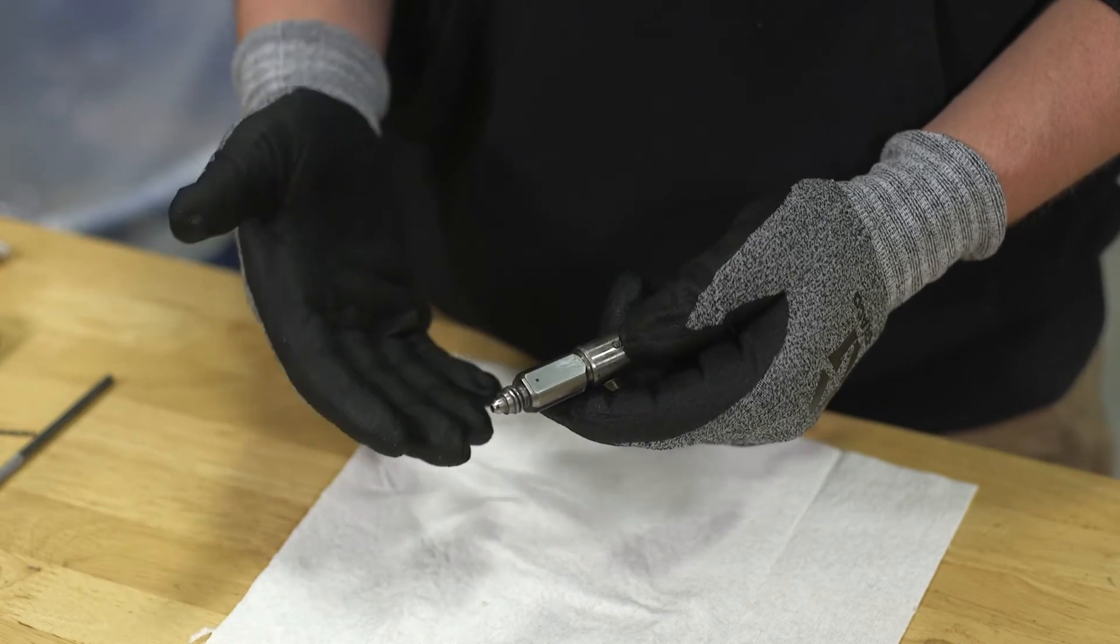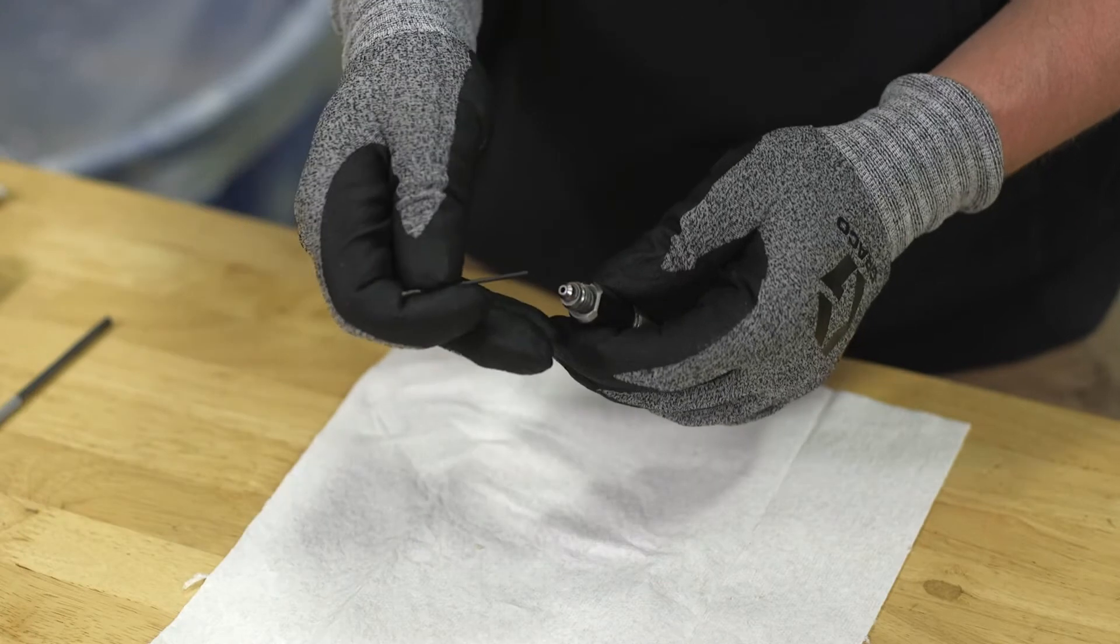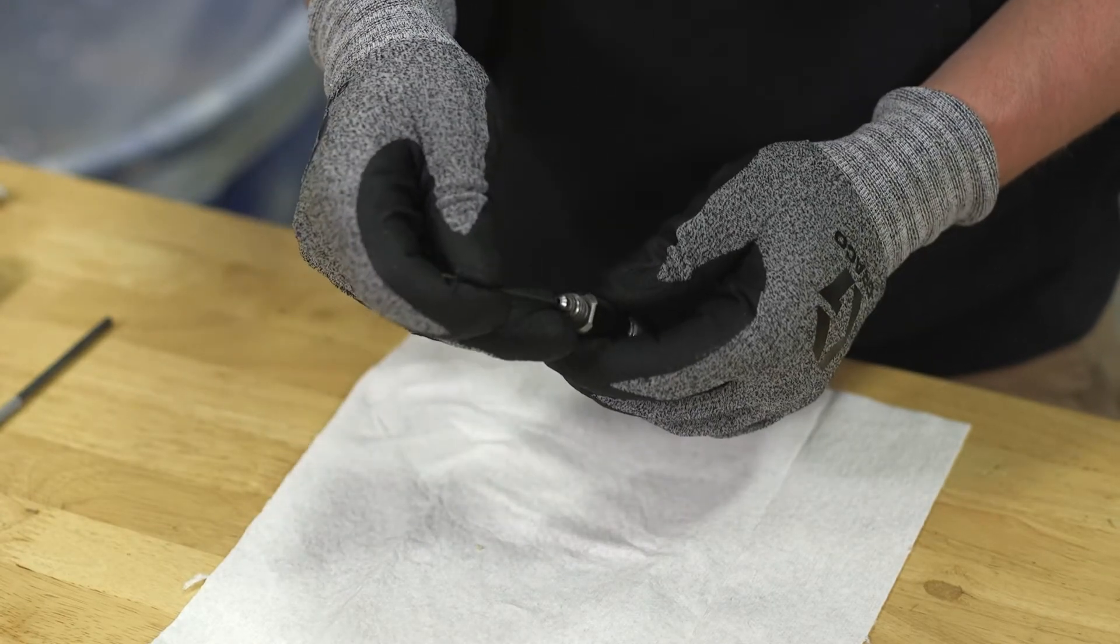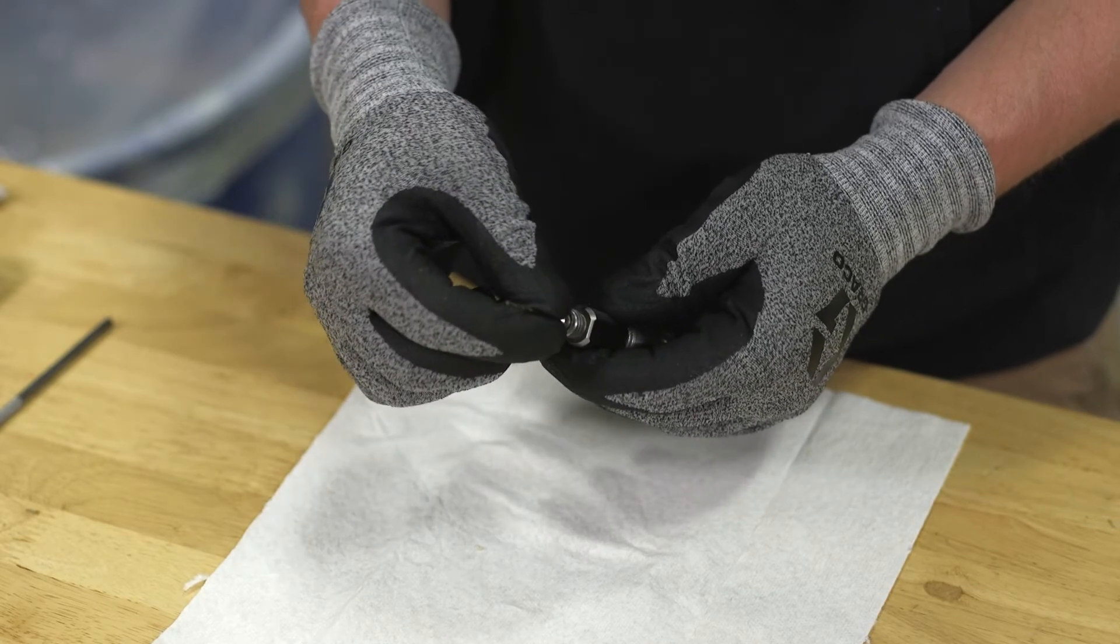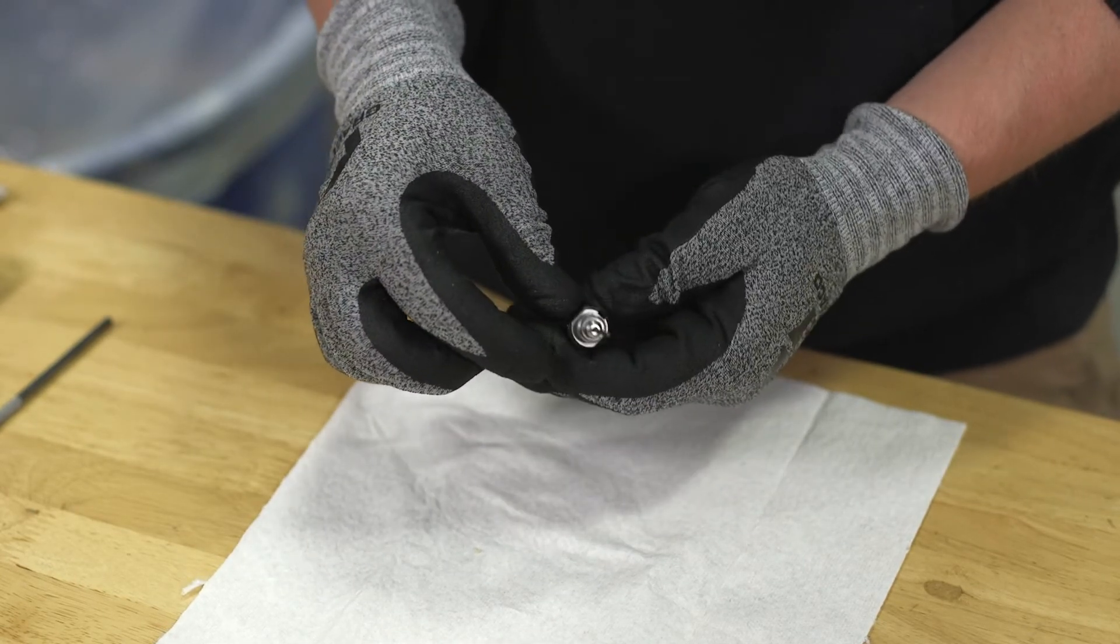So now you're going to take your front drill and you're actually going to spin it around backwards. You're going to put that in your chamber. That thing should hardly move around in there. It should be nice and tight and snug.